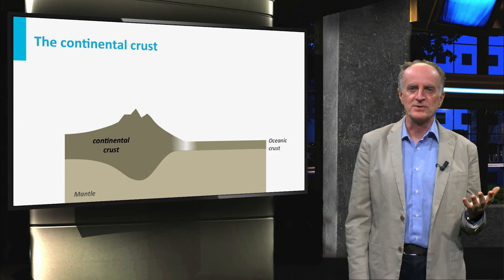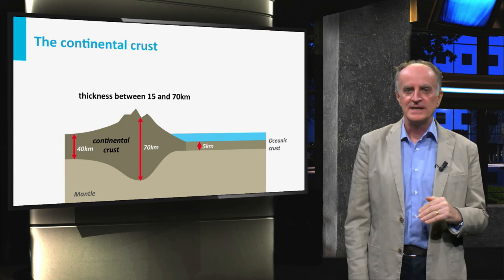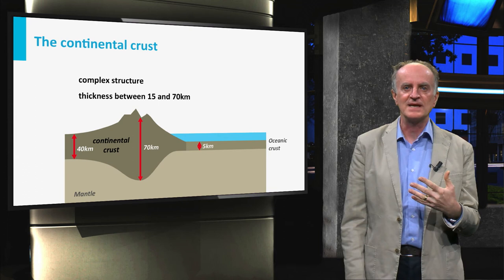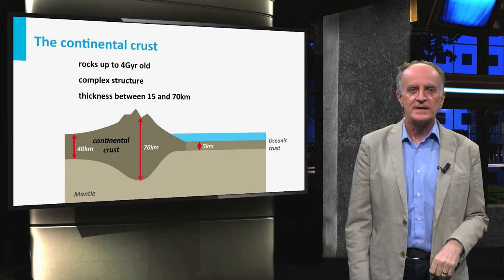The continental crust is much more variable and complex. Thicknesses range from 70 to 15 km, is composed of a large variety of rocks, mainly metamorphic, organized in a fairly unstructured way, and can have very old rocks, up to 4 billion years.